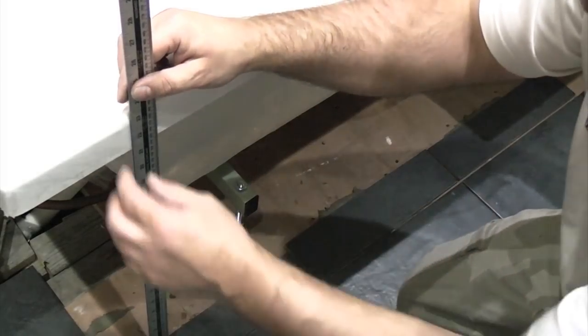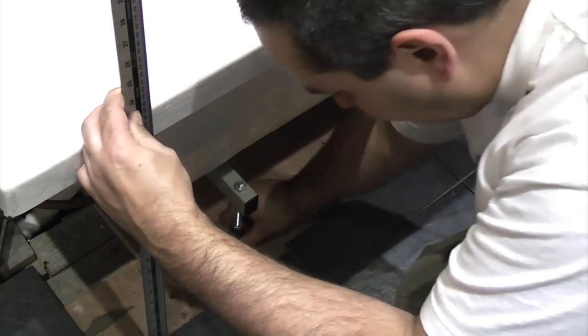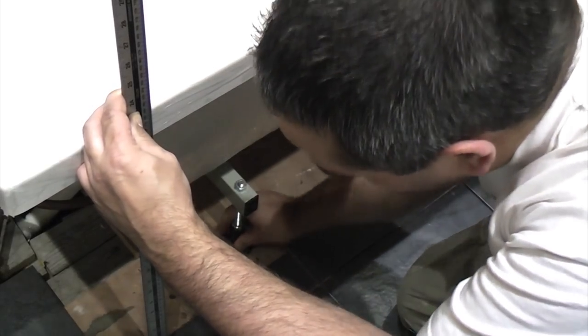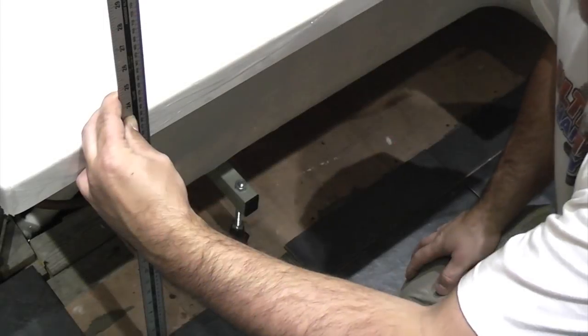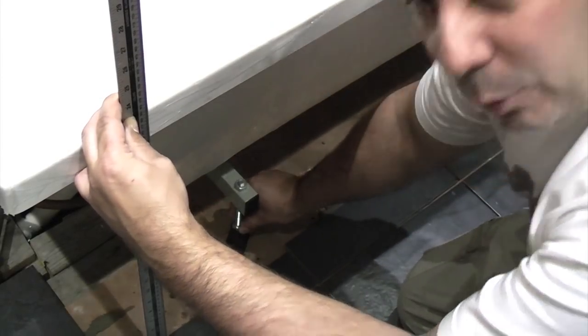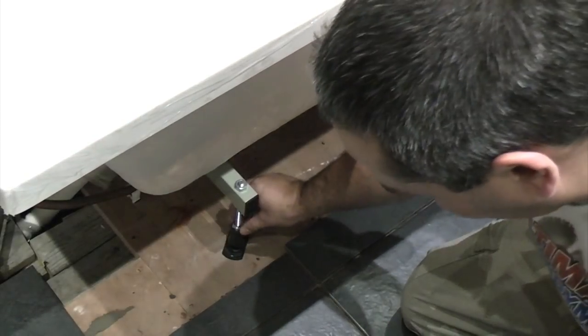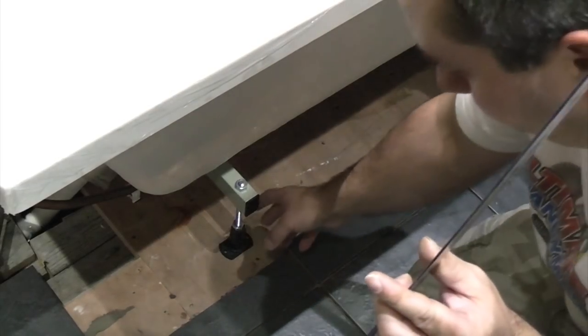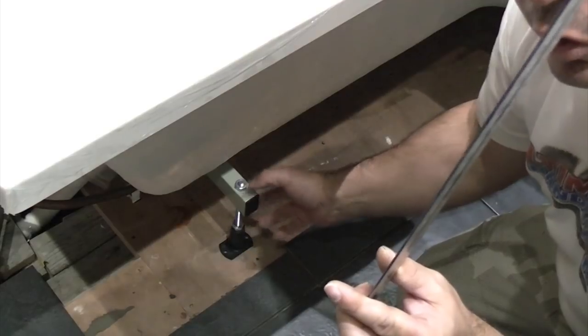We can now set the height of the bath by adjusting the feet that we screwed on earlier. If we turn those in a clockwise direction it should raise the bath up. That is now 545mm, so we can now lock it using the locking nut there on the top. Before we do that, we need to level the other four feet.